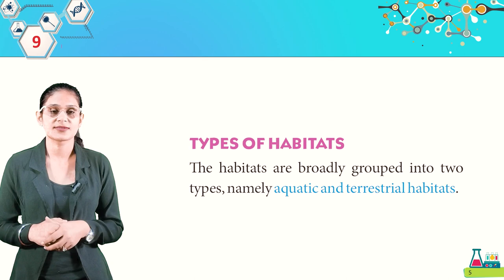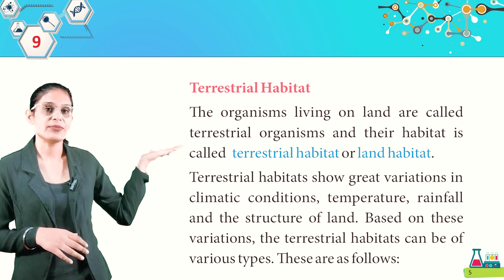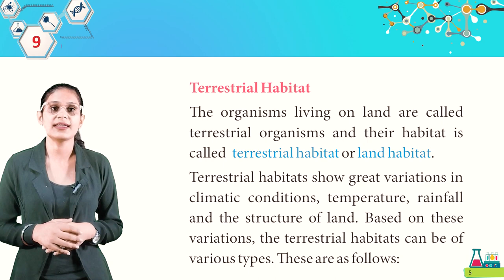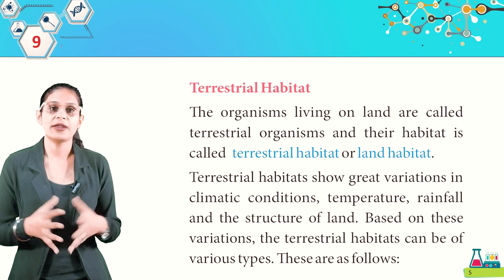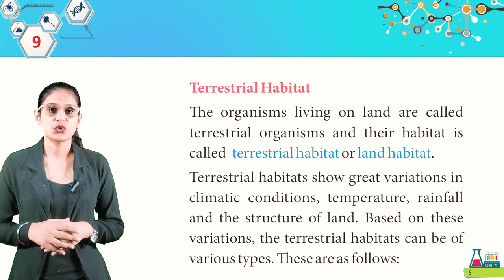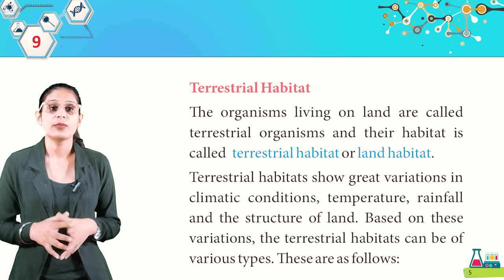We will first discuss terrestrial habitats. The organisms living on land are called terrestrial organisms, and their habitat is called terrestrial habitat or land habitat. Terrestrial habitats show great variations in climatic conditions, temperature, rainfall, and the structure of land. Based on these variations, terrestrial habitats can be of various types.